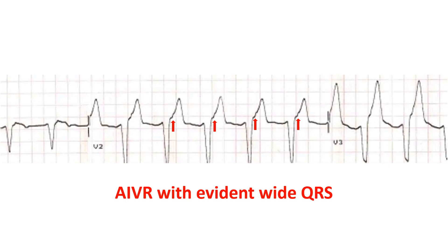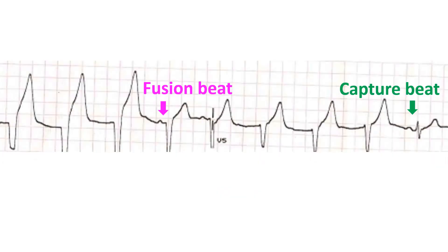In this tracing, the wide QRS is quite evident. The P waves are not very evident, though careful examination will reveal the slight notching of the upstroke of the T waves. The 4th beat shows a P wave with reasonable PR interval and a QRS which is narrower than the initial 3 beats, suggesting that it is a fusion beat.